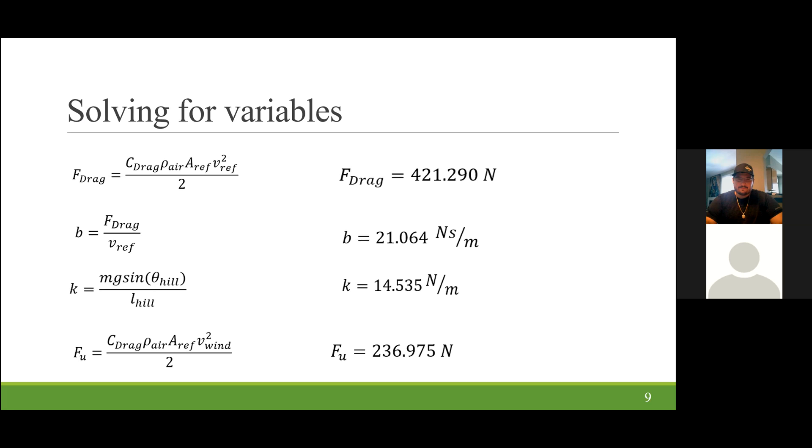We have a spring constant acting on the system in the form of the incline on the vehicle. This is solved by mg sine theta of the hill over the length of the hill. This gives us a spring constant of 14.535 newtons per meter. And lastly, we will need the force of the headwind acting on the vehicle. This is calculated similar to the drag force on the vehicle. We just change the reference velocity to the velocity of the wind, giving us a U-force of 236.975 newtons.